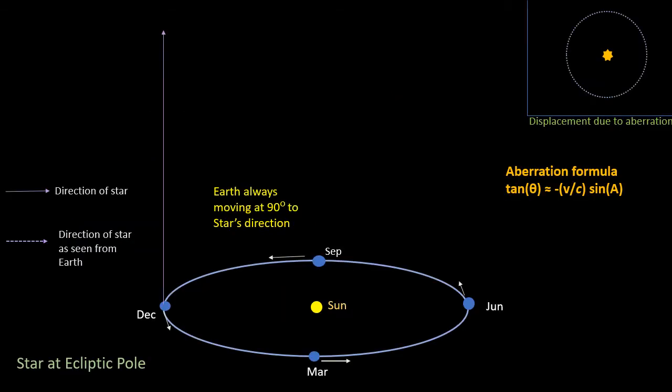So, as we've seen previously, as the Earth goes round its orbit, the direction in which it's moving is continually changing. And so, the displacement of a star from its mean position, due to aberration, has to continually change too.